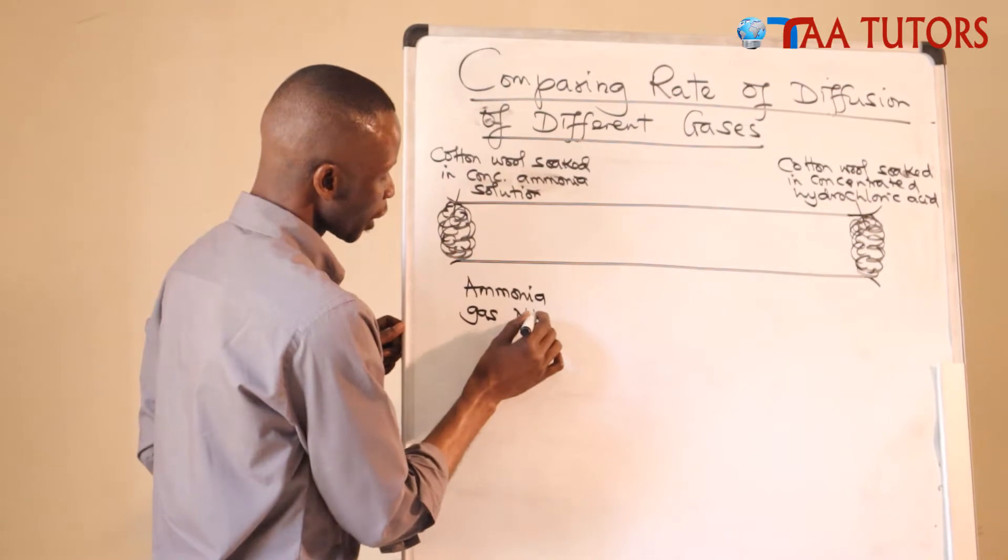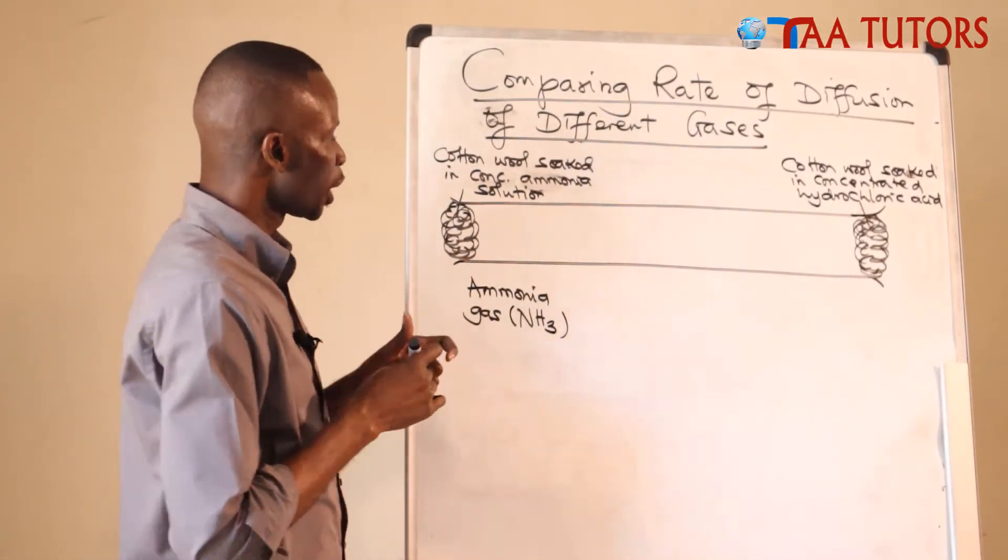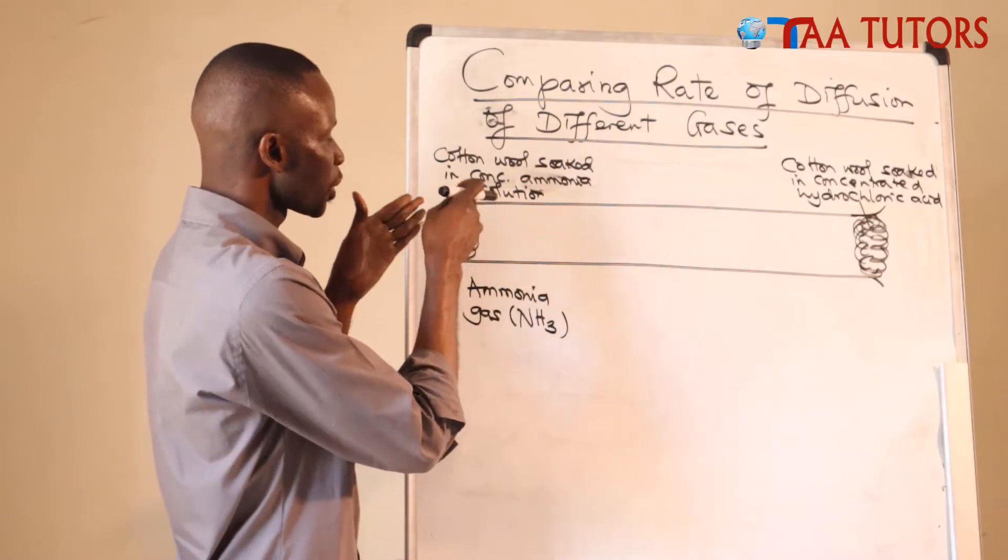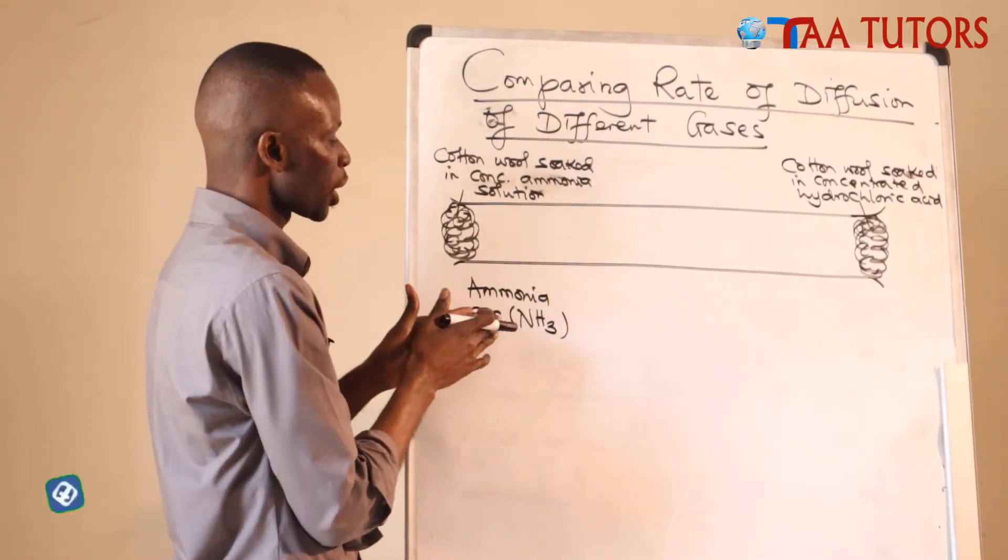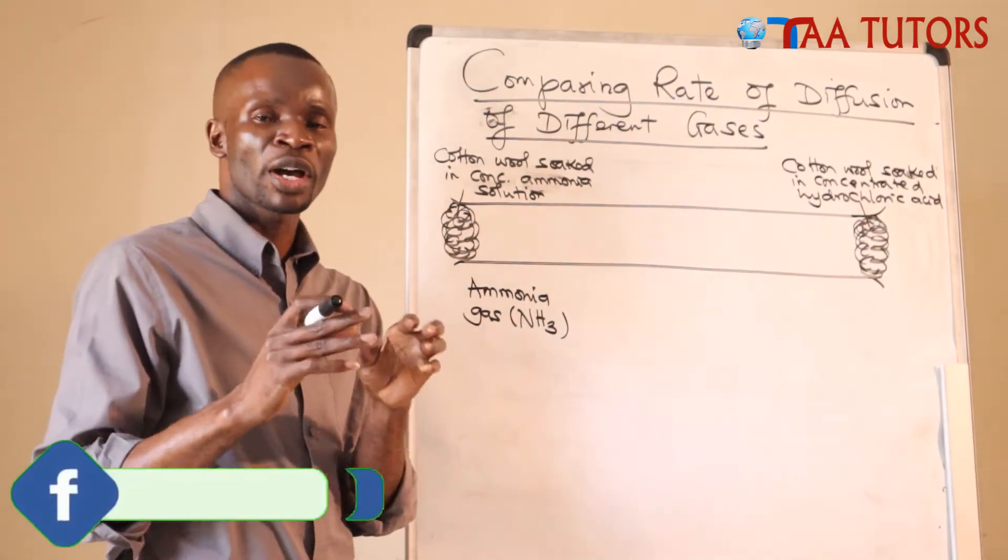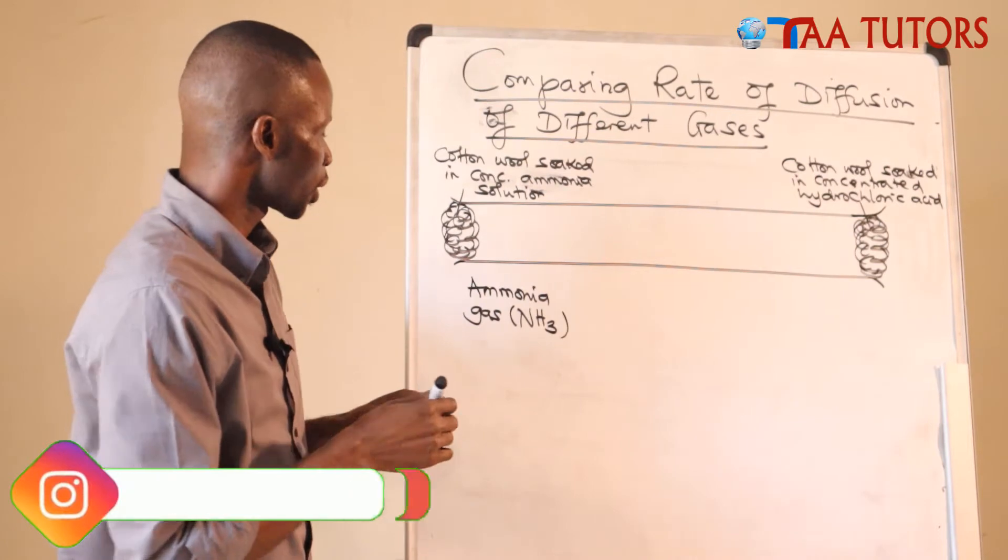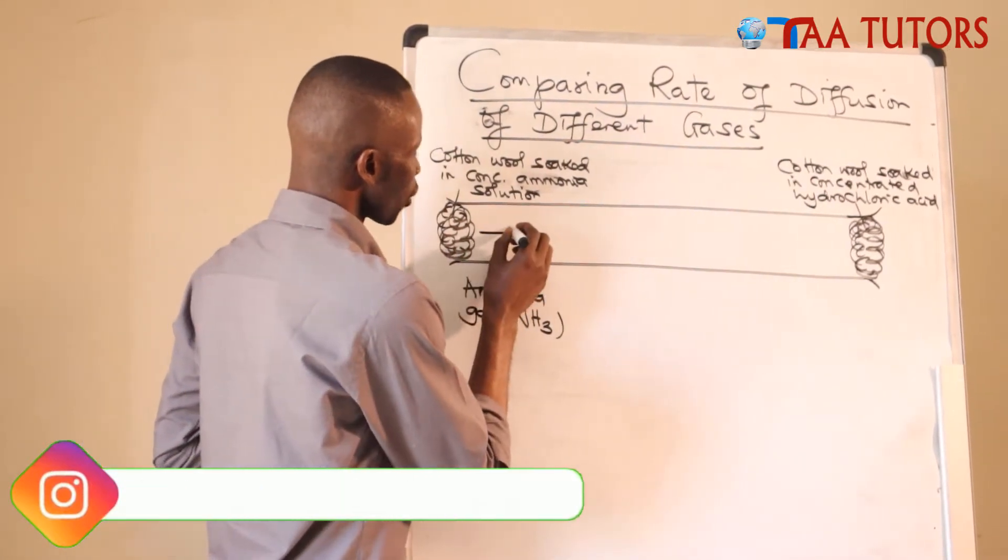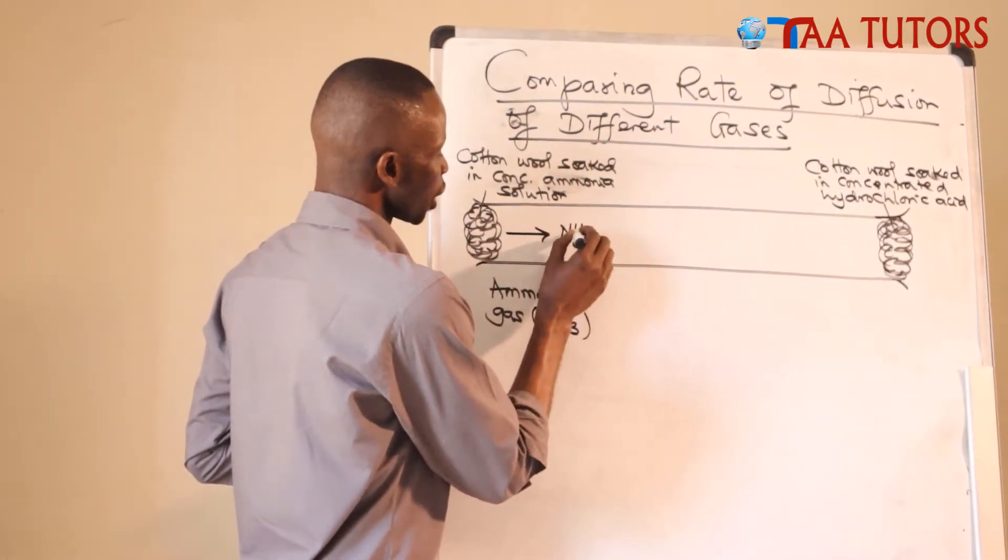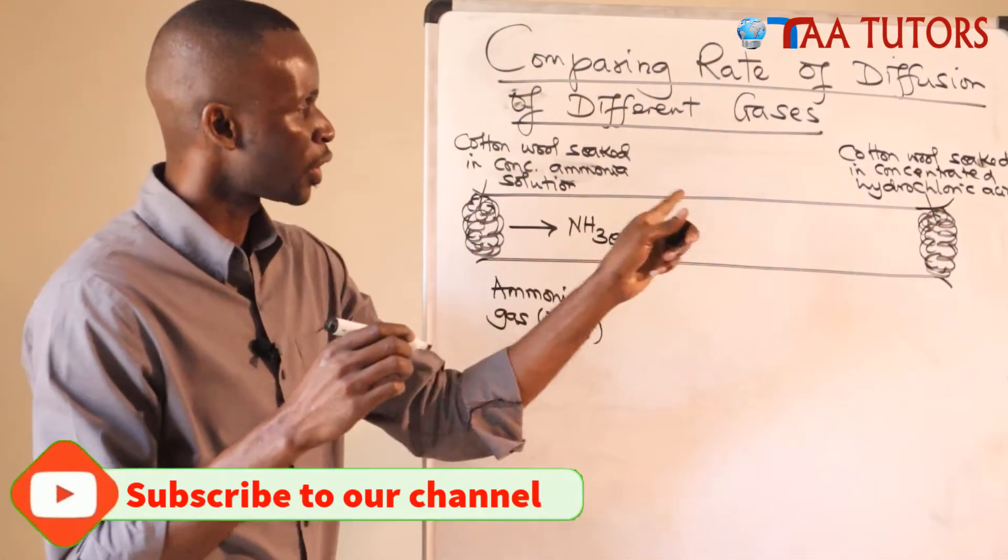In this particular cotton that is soaked in a concentrated ammonia solution, this one will produce ammonia gas. So ammonia gas, if I read the chemical formula of ammonia gas, is NH3. Ammonia gas will be coming from this other side. I've said the reason why this solution will produce ammonia gas is because ammonia solution is not stable. Whenever placed somewhere, it breaks and emits or produces fumes of ammonia gas. So ammonia gas will diffuse going that direction. It will move from this side going the other side.